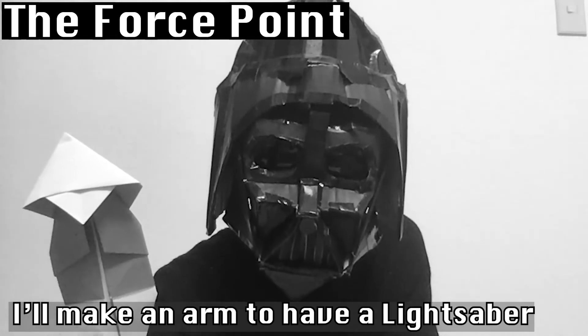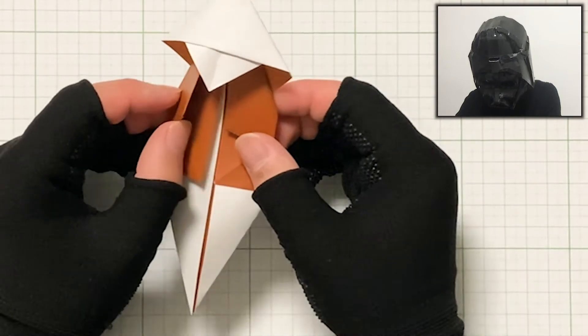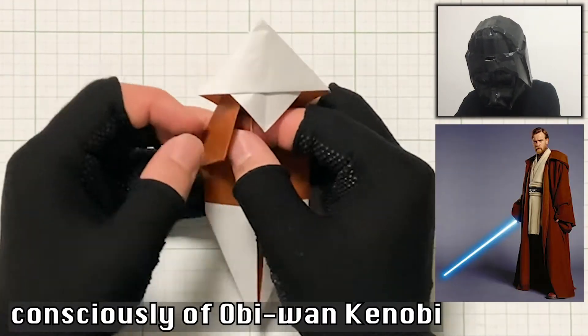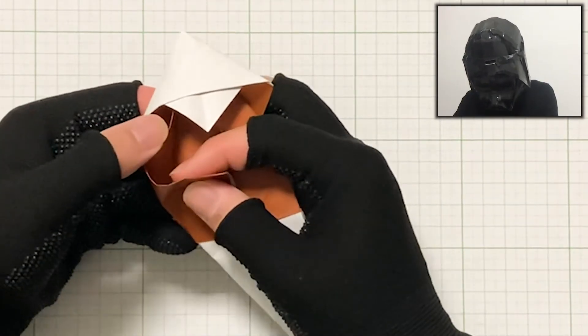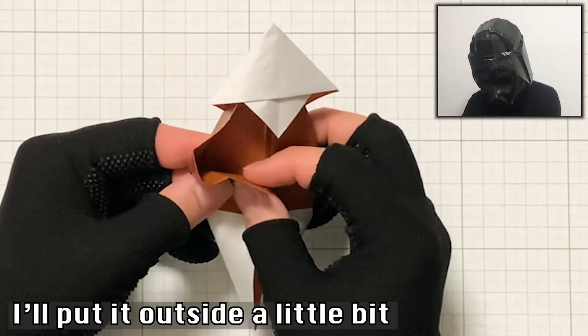Next, I'll make an arm to have a lightsaber. Fold your favorite Jedi's dominant hand. This time, I will fold the right hand side consciously of Obi-Wan Kenobi. Open the one you just folded. Pull it outside a little bit.